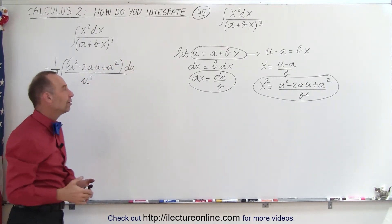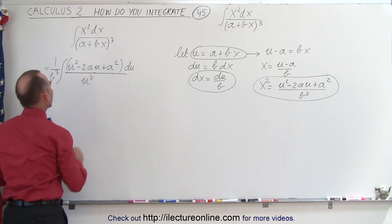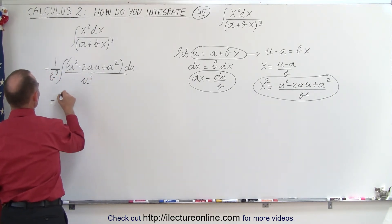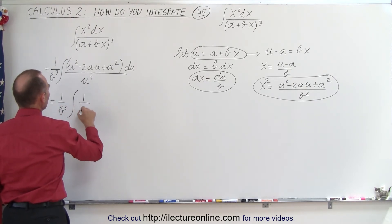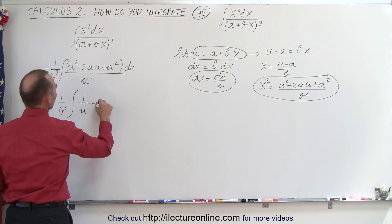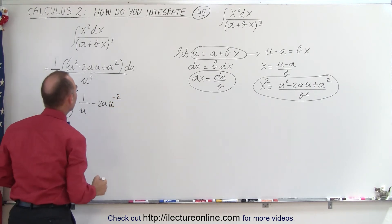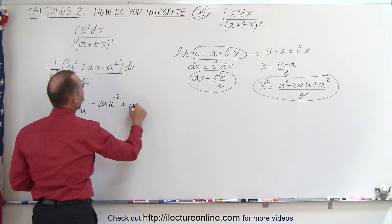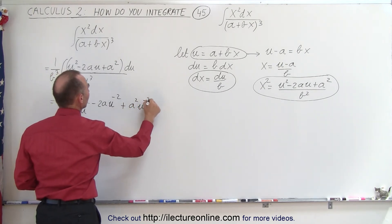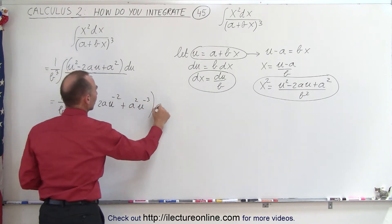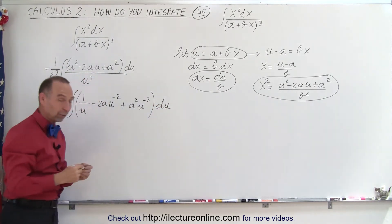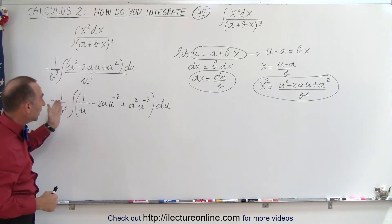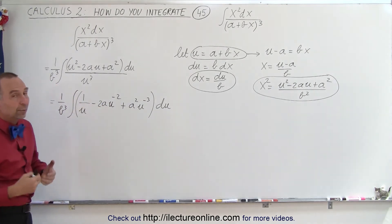And then we do the same thing again. We divide the denominator into the numerator to get the following. So this becomes equal to 1 over b cubed times the integral of 1 over u minus 2a divided by u squared, but I'm going to write that in the numerator, u to the minus 2. And then here we have plus a squared divided by u cubed, or plus a squared u to the minus 3, and the whole thing times du. So again, the trick is to divide the denominator into the numerator and end up with three separate integrals that are relatively easy to do.